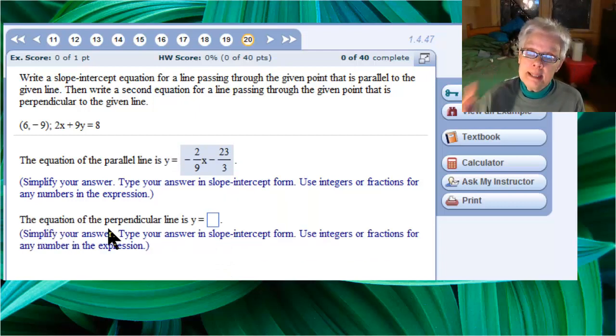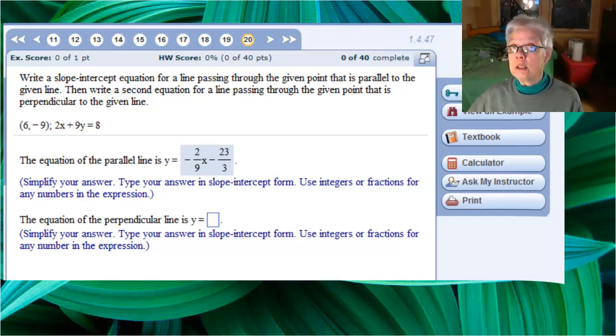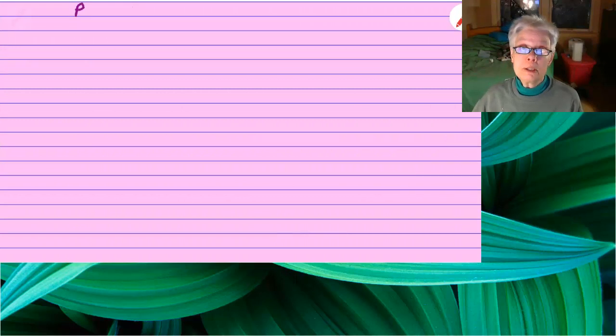Now comes the second part of the question. We're going to find the equation of a line that's perpendicular to 2x plus 9y equals 8. Again, no decimals in the equation, which includes the slope.